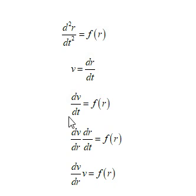first order equation, where dv/dt is now a function of r. Now we can use the chain rule and write that dv/dt is dv/dr times dr/dt. Remember that dr/dt was simply v. So now we have that dv/dr times v is equal to f of r.